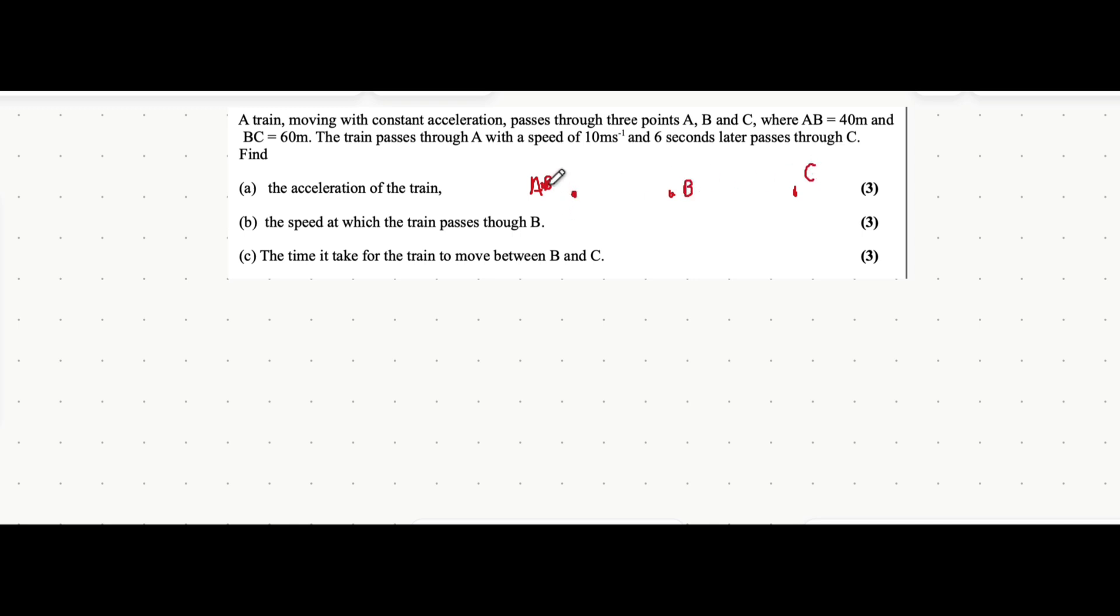The distance from A to B is given as 40 meters, and B to C is 60 meters. The train passes through A with a speed of 10 meters per second, and six seconds later passes through C. You have to split this up into three different sections: A to B, B to C, and the whole journey A to C.